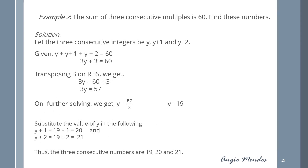Here's another example: the sum of three consecutive numbers is 60. Let these three consecutive numbers be y, y plus 1, and y plus 2. Their sum gives y plus y plus 1 plus y plus 2 equal to 60, which simplifies to 3y plus 3 equal to 60.